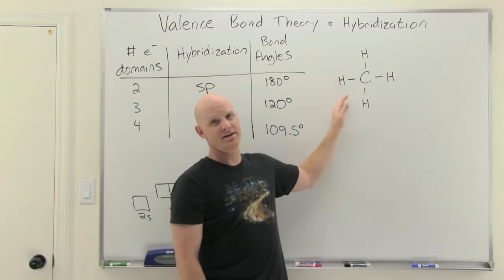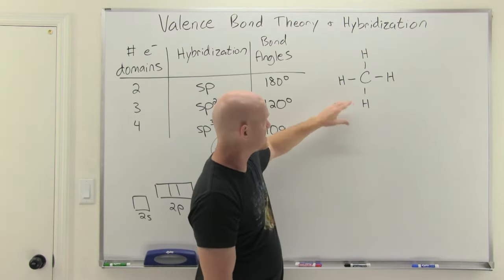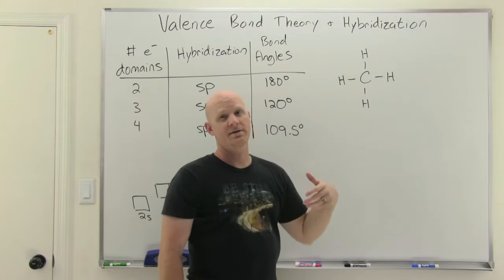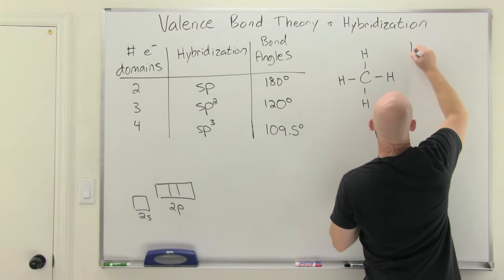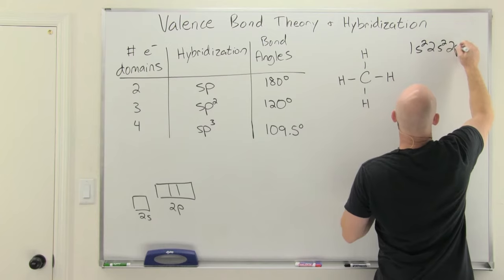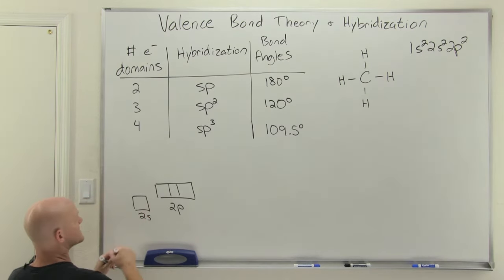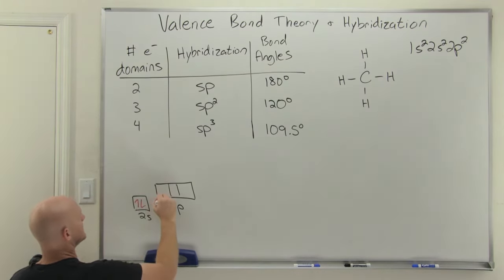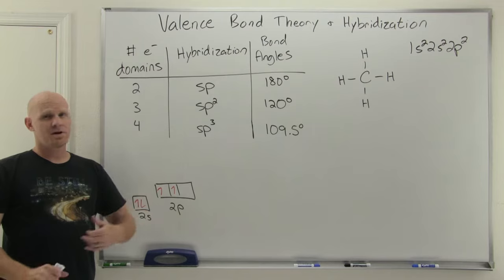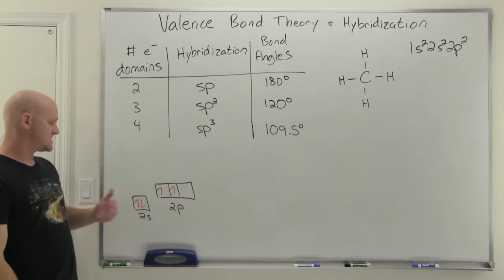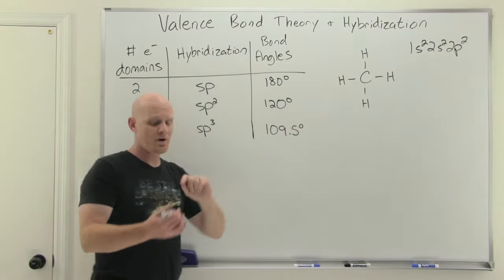Let's take a closer look at methane to understand where hybridization comes from. Carbon is bonded to four hydrogens. Valence electrons are used in bonding, so looking at carbon's electron configuration — 1s2, 2s2, 2p2 — we focus on the 2s and 2p electrons. Carbon has two electrons in the 2s orbital and two unpaired electrons in two different 2p orbitals. Classic bonding theory says only unpaired electrons are used in bonding, so carbon should only be able to make two bonds — but we know carbon makes four. That's problem number one.